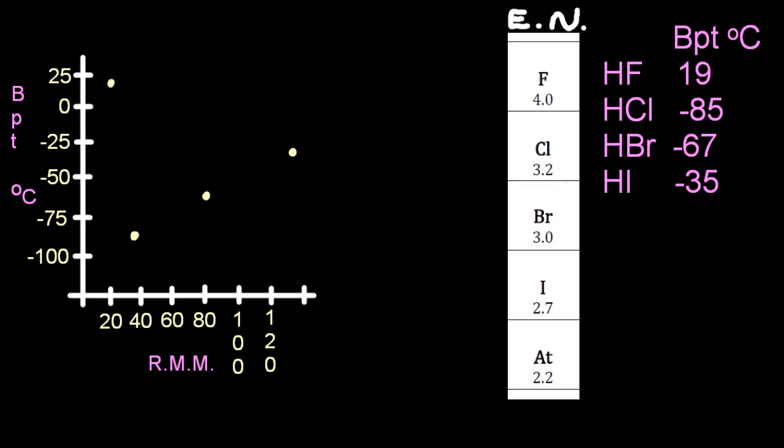Looking at the hydrogen halides and their boiling points, you can see that there is definitely an outlier there. The hydrogen fluoride seems a lot higher than it should be if it followed the pattern of the rest of them. And that's because the intermolecular forces are stronger. Something's holding the hydrogen fluoride molecules together more, and that is the hydrogen bonding.